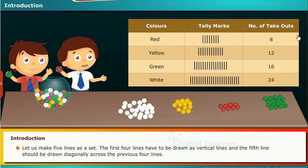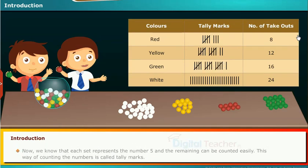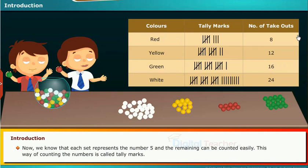Let us make 5 lines as a set. The first 4 lines have to be drawn as vertical lines and the 5th line should be drawn diagonally across the previous 4 lines. Now we know that each set represents the number 5 and the remaining can be counted easily.